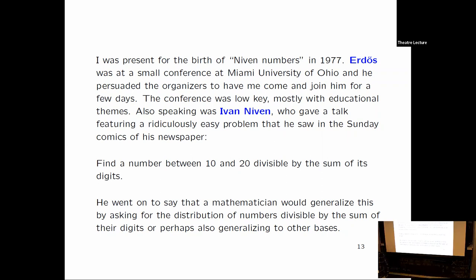And I came up and talked to Erdős. And one of the people at the conference was Ivan Niven. And he gave a talk about how a mathematician might read the Sunday comics in the newspaper. Young people, newspapers are these things. So it was this game for kids. Find a two-digit number divisible by the sum of its digits. It wasn't even two digits, it was between 10 and 20. Find a number between 10 and 20 divisible by the sum of its digits, even leaving out 10 and 20 itself. The problem is absolutely trivial.